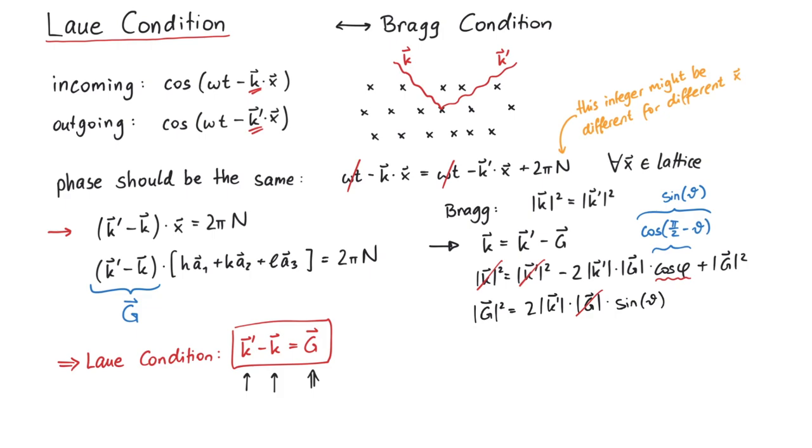Next, the wave vector is given by 2π over λ. And g is given by n times 2π over the lattice distance d.